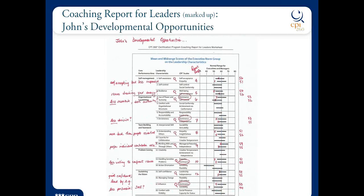These are his strengths. Now for his developmental opportunities — he had nine. The first one is self-awareness. Two scales: SA and EM, self-acceptance and empathy. His empathy score was 51, and the expected range was about 54 to 67. So it was lower on empathy. The report says he's probably not as self-aware. The text says he's generally self-accepting because of that SA score, but perhaps a little less responsive to others. We noted that from the client feedback report in our analysis of those scale scores, and here it's being confirmed.